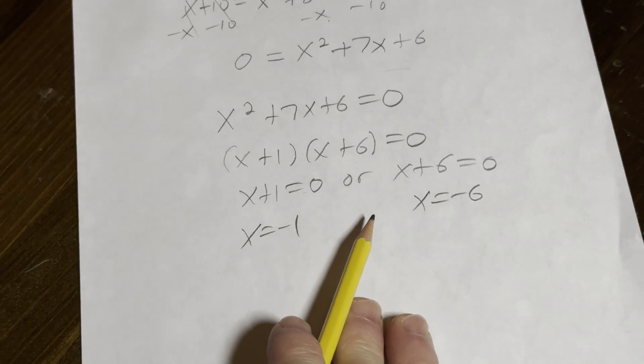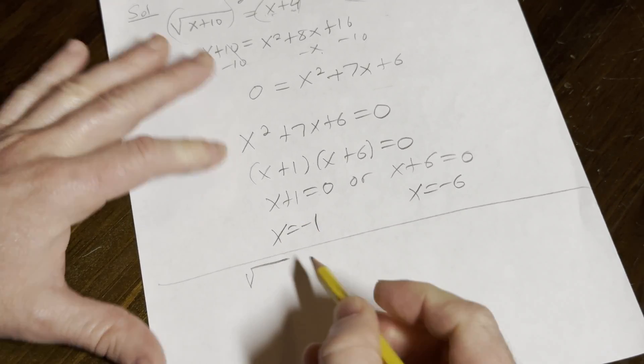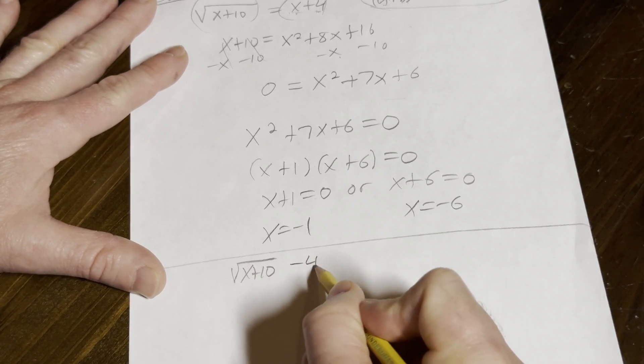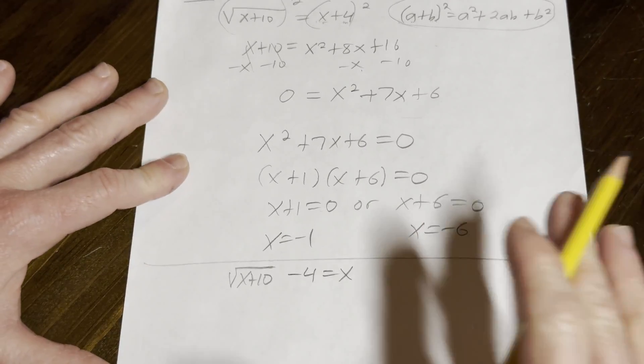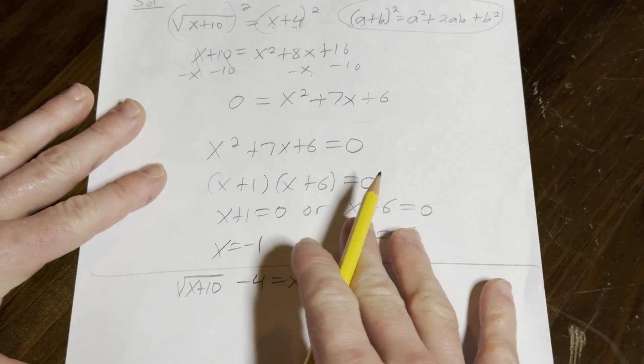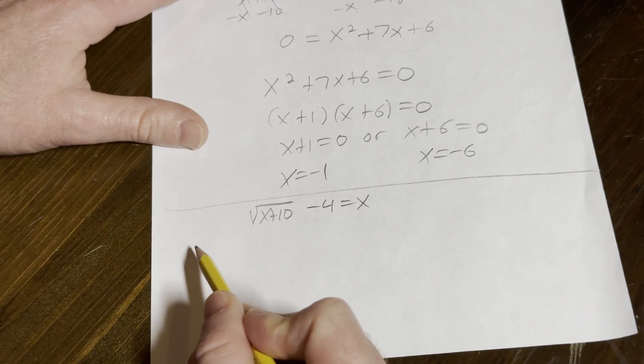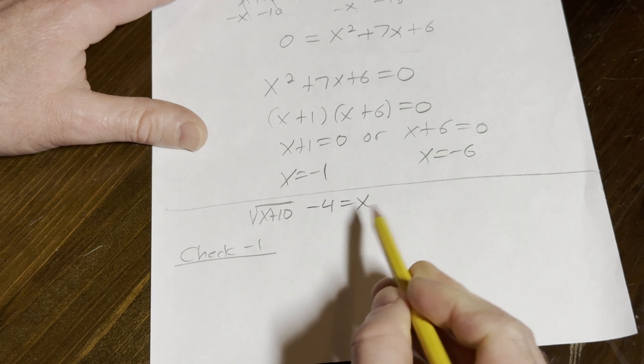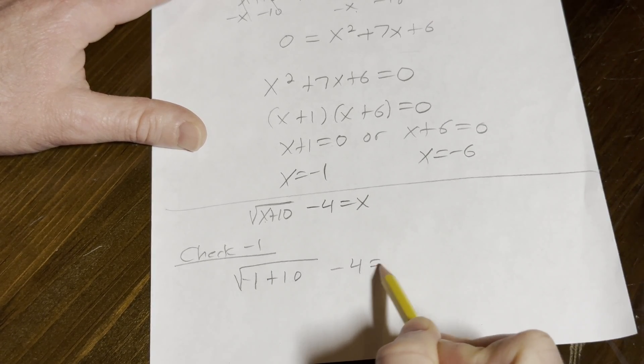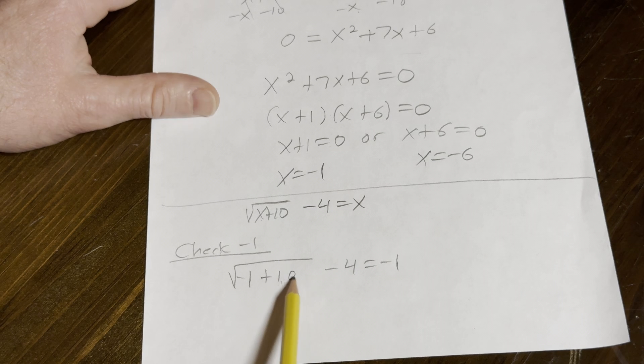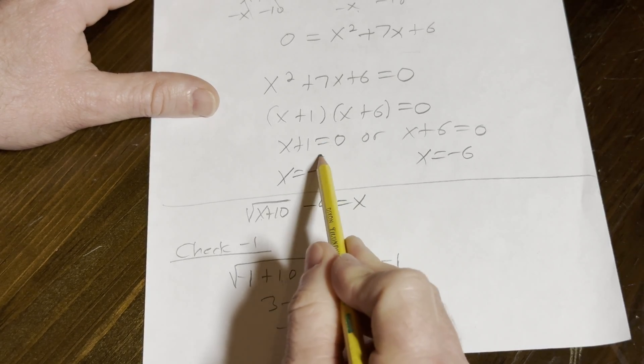Now, we need to go back to the original equation and check these answers. Very, very important. So the original equation was √(x+10) - 4 = x. I had a window open and the sun was just shining through. Nothing wrong with sun, but when it blinds the camera, I think this is a little bit better. All right, so we're going to check -1. So we're just going to put -1 everywhere you see an x. So √(-1+10) - 4 = -1. Negative 1 plus 10 is 9. The square root of 9 is 3. 3 - 4 = -1. -1 = -1. That's a true statement. So -1 is one of the solutions.